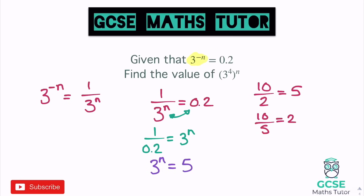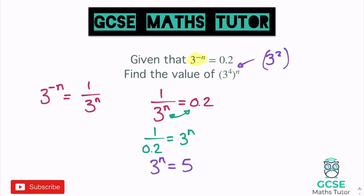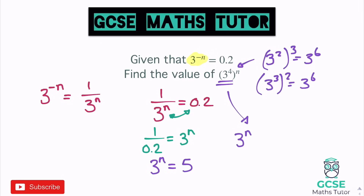We need to find 3 to the power of 4 to the power of n. The key insight is that swapping the order of powers doesn't change the result: 3 squared to the power of 3 equals 3 to the power of 6, which is the same as 3 cubed to the power of 2. So we can rewrite 3 to the power of 4 to the power of n as 3 to the power of n to the power of 4.